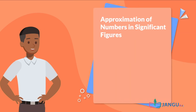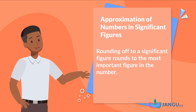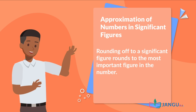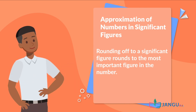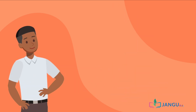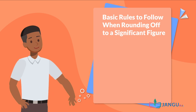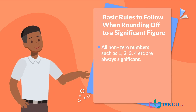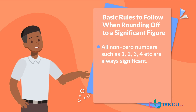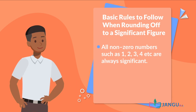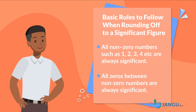Rounding up to a significant figure can be applied to any kind of number. It rounds to the most important figure in the number. There are some rules to follow when rounding off to a significant figure: 1. All non-zero numbers such as 1, 2, 3, 4, etc. are always significant. 2. All zeros between non-zero numbers are always significant.